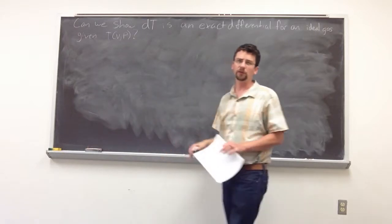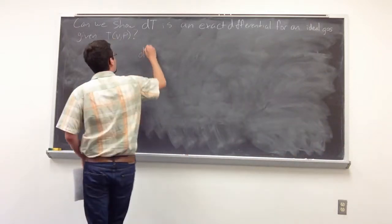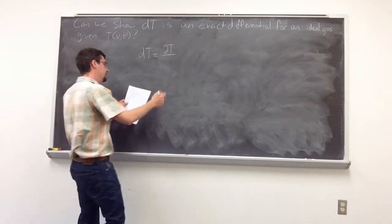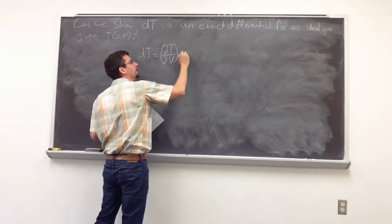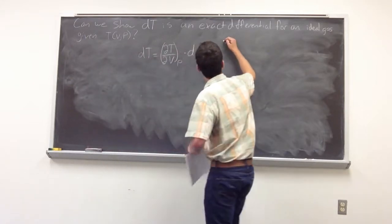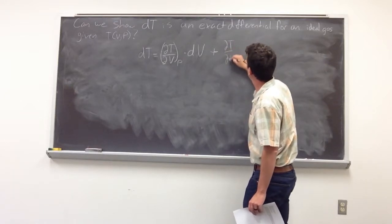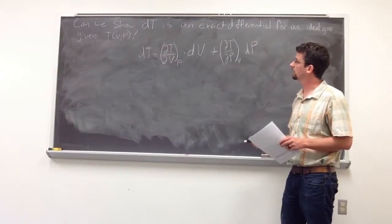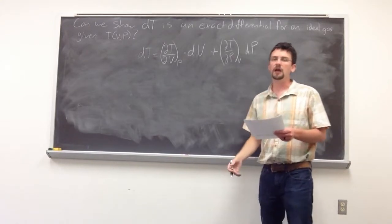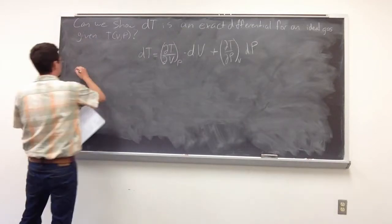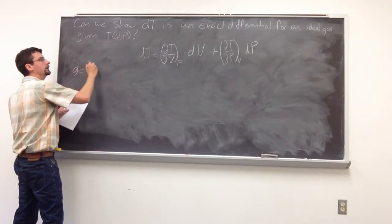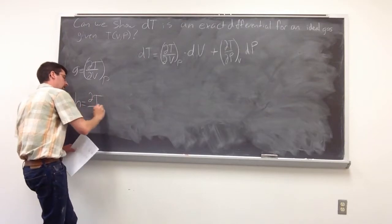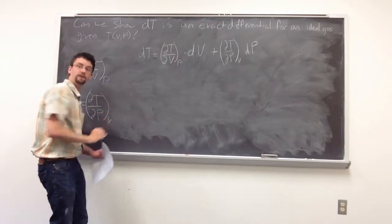We need to get the total differential of temperature: dT equals the partial derivative of T with respect to V keeping P constant, times dV, plus the partial derivative of T with respect to P keeping V constant, times dP. We define g as the partial of T with respect to V at constant P, and h as the partial of T with respect to P at constant V.